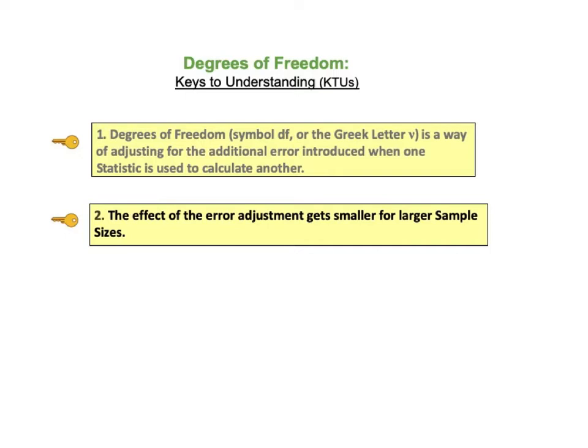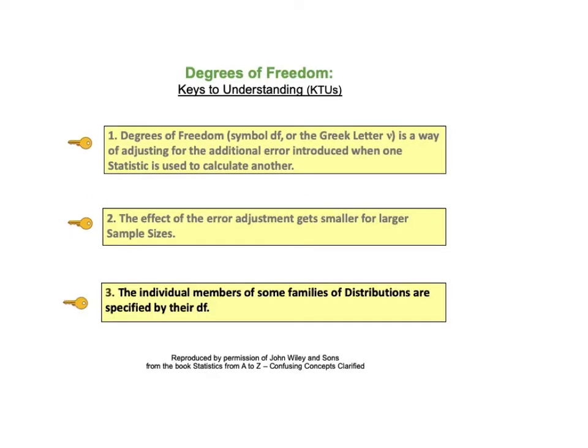KTU number 2 says: The effect of the error adjustment gets smaller for larger sample sizes. The third and final key says: The individual members of some families of distributions are specified by their degrees of freedom.